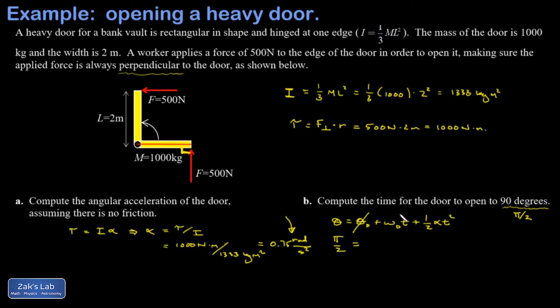The initial velocity was also 0, and then I have one-half alpha, which is 0.75 radians per second squared times t squared.